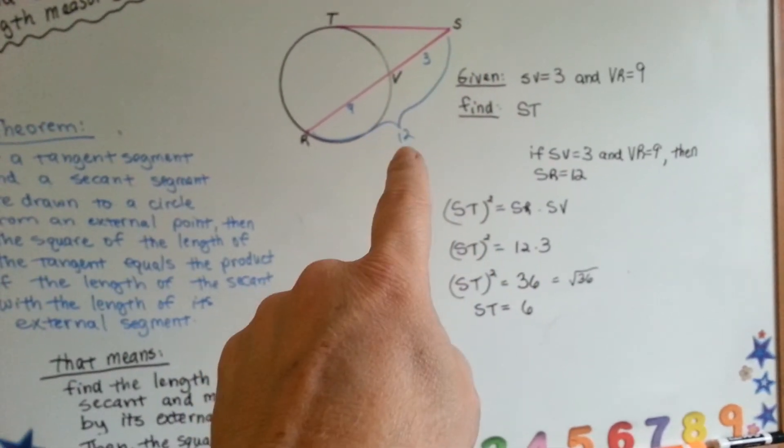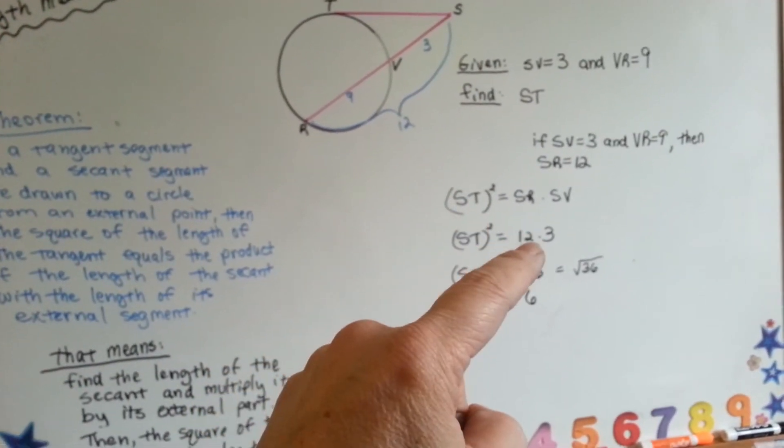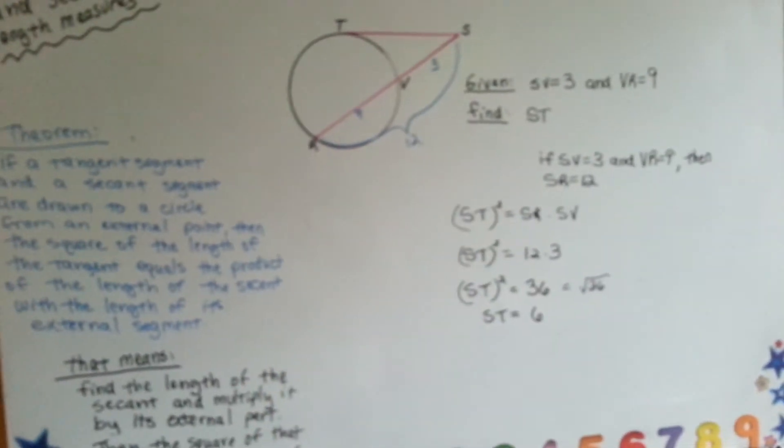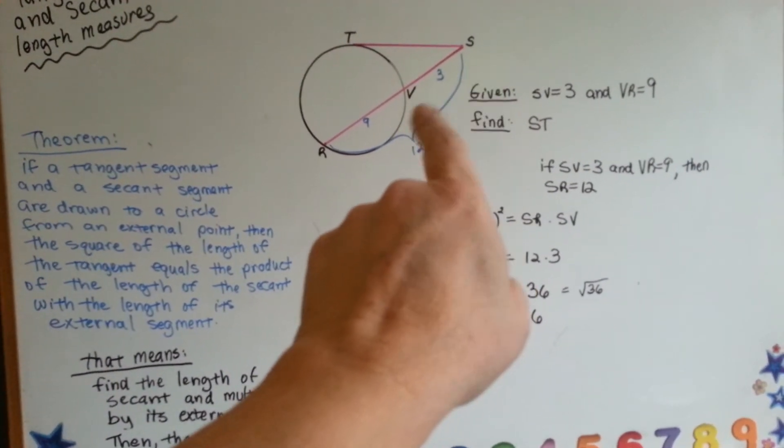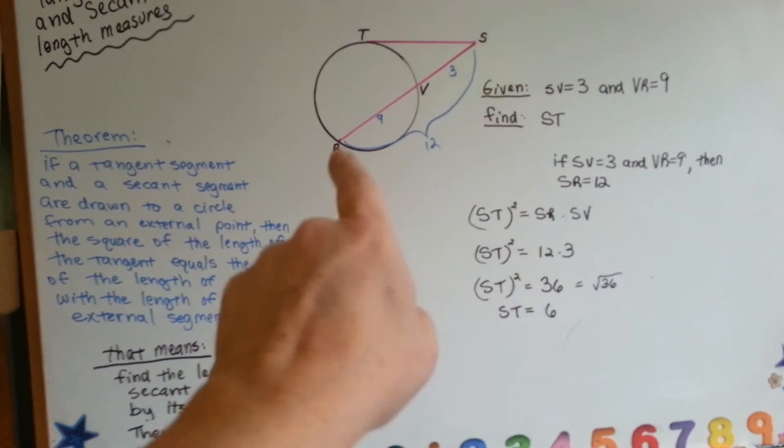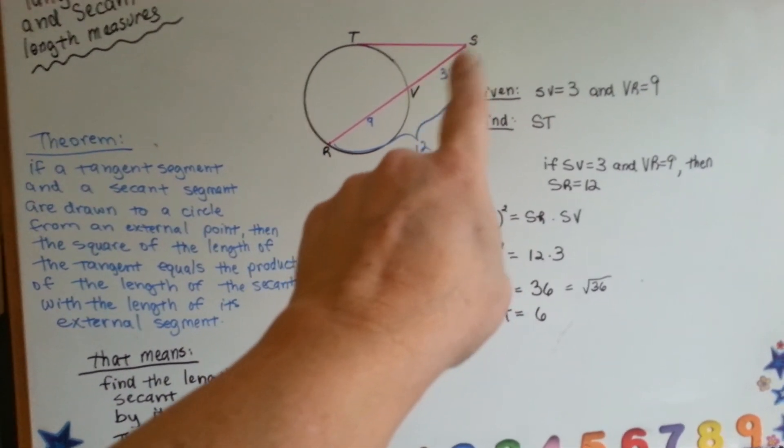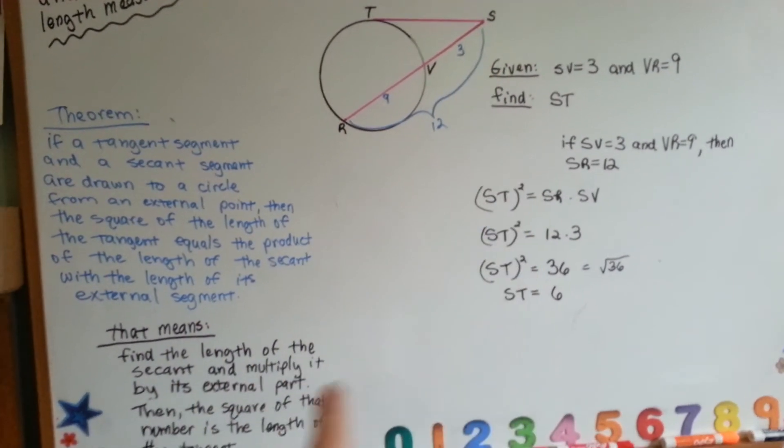You're going to take the 12 and you're going to multiply it by sv. Pardon my non-focus there. You're going to take the entire 12, and you're going to multiply it by the little section outside the exterior of v.